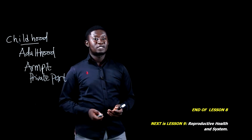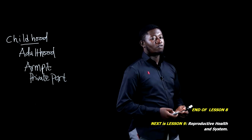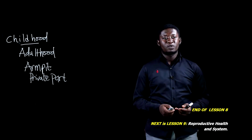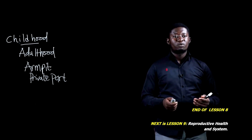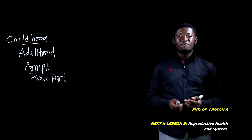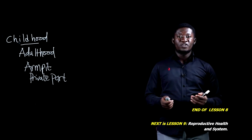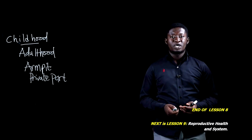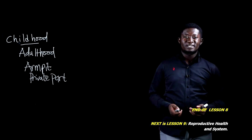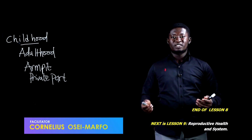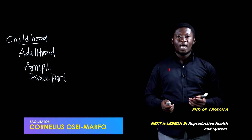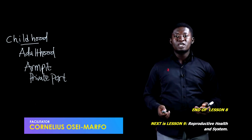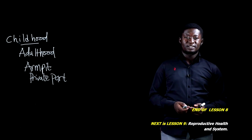This brings us to the end of this lesson. In this lesson, we have defined adolescence and looked at three features of adolescent males and females. In our next lesson, we'll look at reproductive health and the reproductive system. See you in the next lesson.